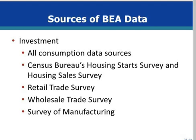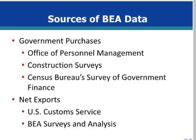The BEA also looks at the Housing Start Survey and Housing Sales Survey produced by the Census Bureau for investment data. The data for government purchases comes from the Office of Personnel Management (OPM), which collects data on wages and benefits of both public and private sectors, and the Construction Survey and the Census Bureau's Survey of Government Finance, which provide data on government consumption and investment expenditures. The net exports data comes from U.S. Customs Service reports and the BEA surveys of domestic exporters and importers of services.